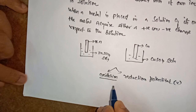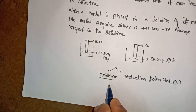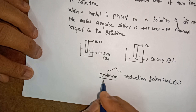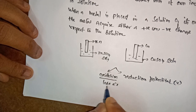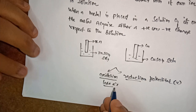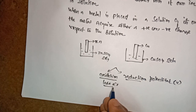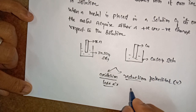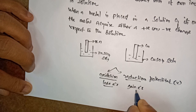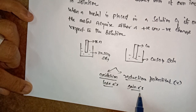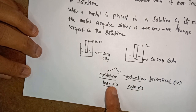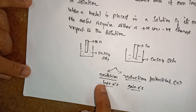In oxidation potential, when a metal is dipped in its solution which contains its own ion, that metal will start to lose electrons — that is called oxidation. In reduction potential, when the metal is kept in its salt solution containing its own ion — suppose copper dipped in copper sulfate solution — it will gain electrons. Because of this gain of electrons, the potential developed is called reduction potential. Because of this loss of electrons, the potential developed is called oxidation potential.